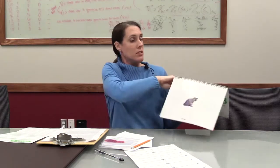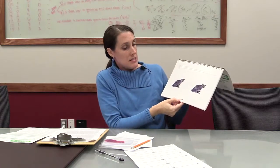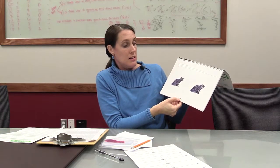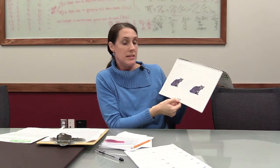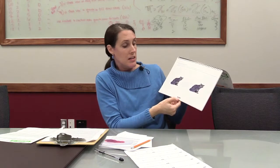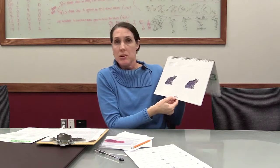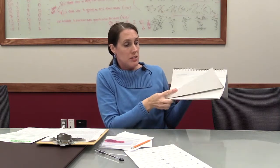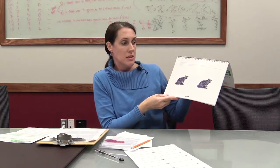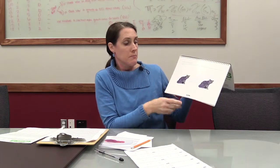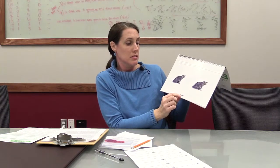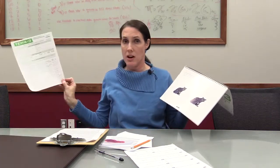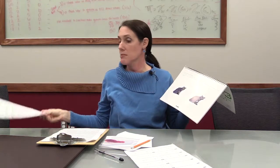On the first page of the test, it says card A — capital A — one dash little a. The capital A just means it's the form A version of the test. That's what all pages start with: the capital A. Item number one, and the little a is the first trial for item number one.